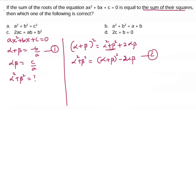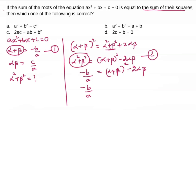Comparing equations 1 and 2, since the sum of the roots equals the sum of their squares, we equate: -b/a = (α + β)² - 2αβ. Substituting, -b/a = (-b/a)² - 2(c/a), which gives -b/a = b²/a² - 2c/a.